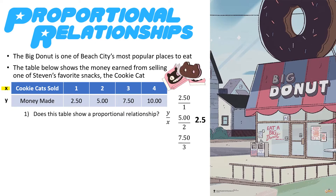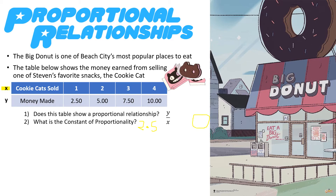So yes, this is a proportional relationship. That can also be asked as: what is the constant of proportionality? And this 2.5 is your constant of proportionality — so the answer to that would be 2.5. We learned that in our last lesson, but it is going to be very important you understand that for this lesson.